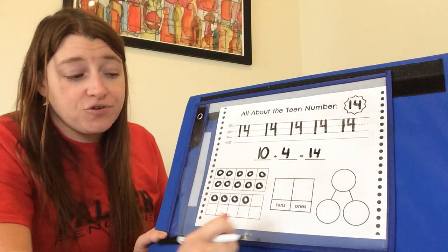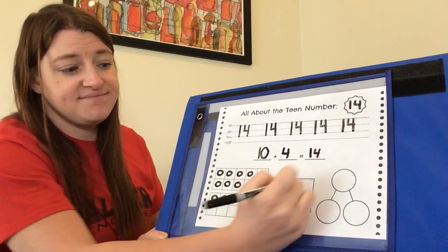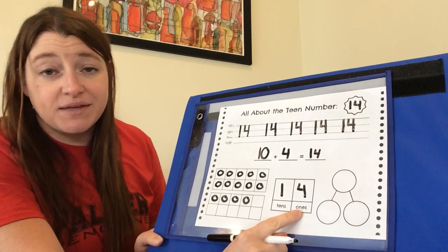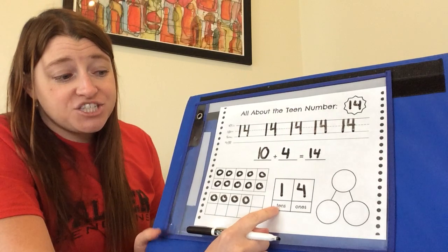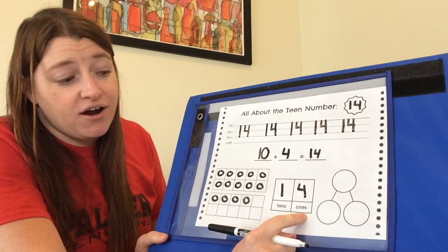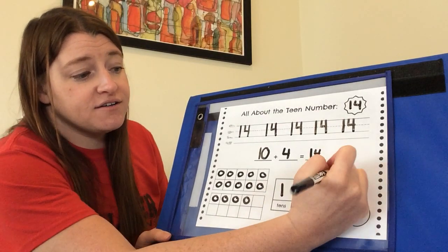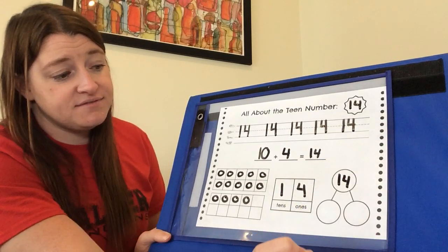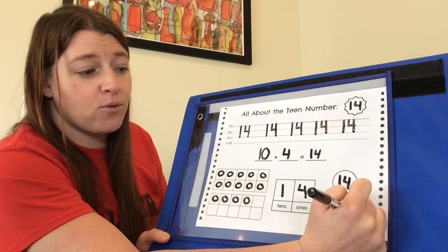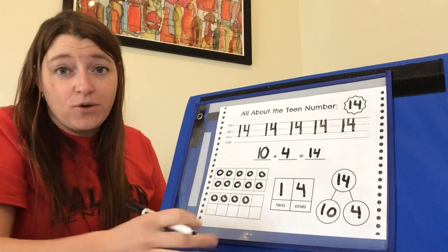And we can also show 14 in a chart like this. 14 has one 10 and four ones. This is the tens place and this is the ones place. And any number that we have, this digit will tell us how many tens there are, and this digit will tell us how many ones there are. Okay, now let's show 14 using our number bond. 14 is our total. We have a group of 10 and we have four more ones. Great job practicing the number 14.